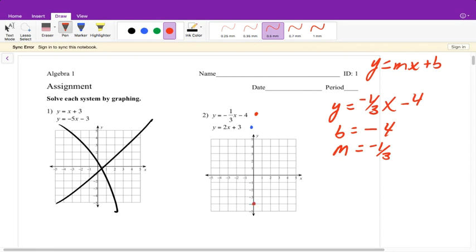So we plot our y-intercept first at negative four, then we plot our next point using our slope. So this is our rise over run. It is our change in y over change in x, but it says we're going down one and then to the right three: one, two, three.